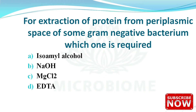Next: for extraction of protein from the periplasmic space of gram-negative bacteria, which agent is required? The options are isoamyl alcohol, NaOH, MgCl2, and EDTA. The right answer is option D — EDTA. EDTA stands for ethylenediamine tetraacetic acid; it is a metal chelating agent.